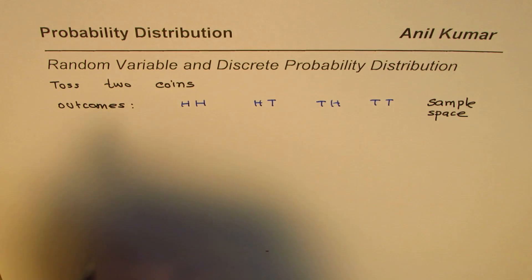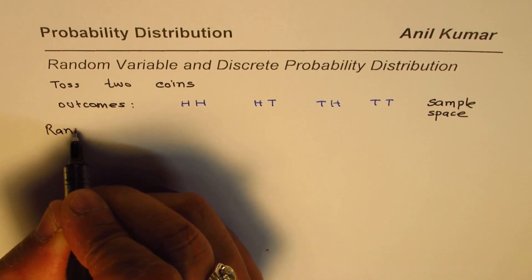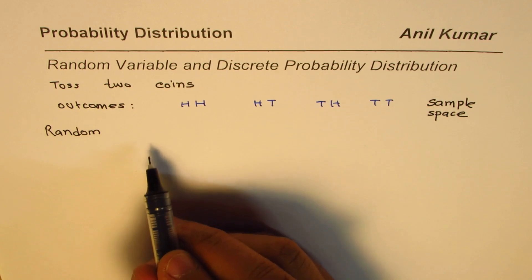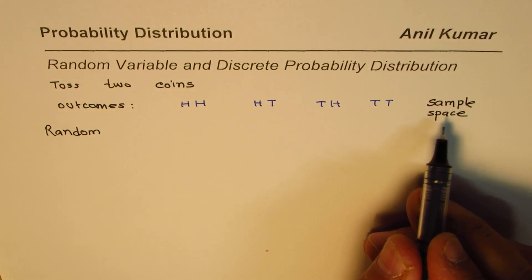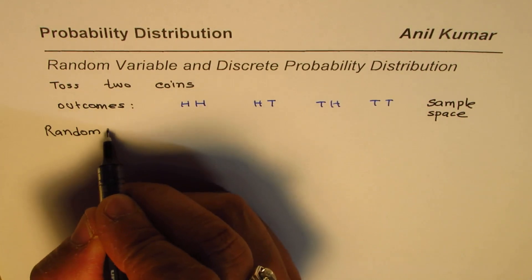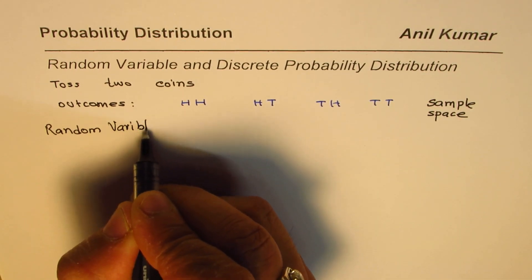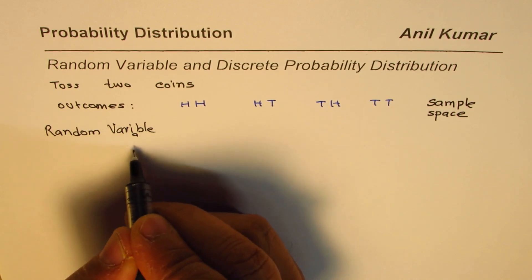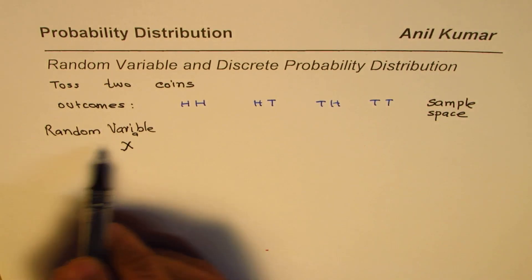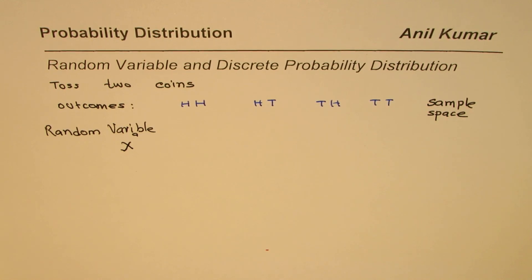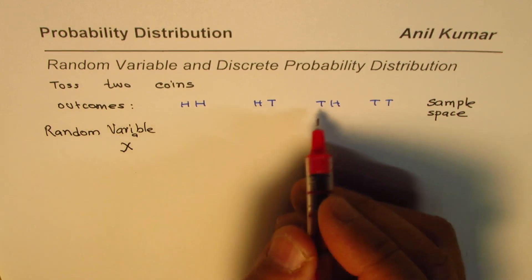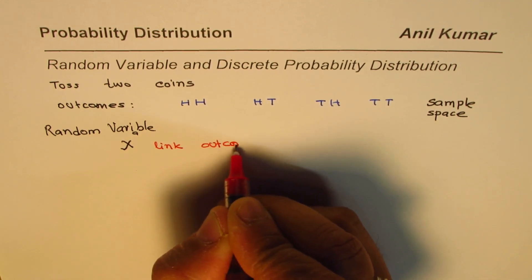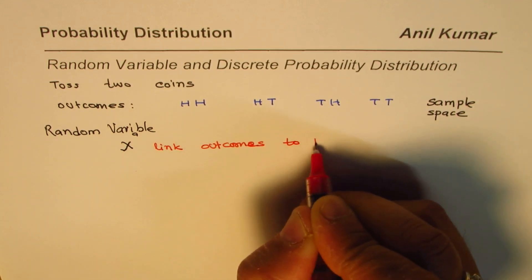What is a random variable? A random variable is basically a function which is created from the outputs in the sample space, linking them with some numbers. These random variables are always designated by a capital letter, and they are defined such that they link outcomes to real numbers.